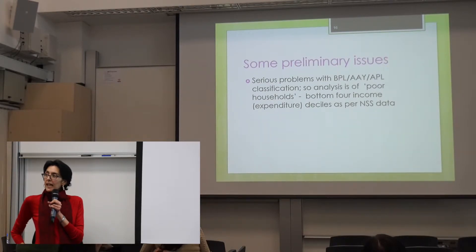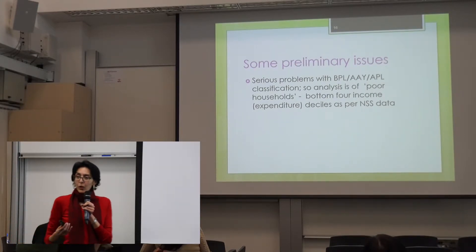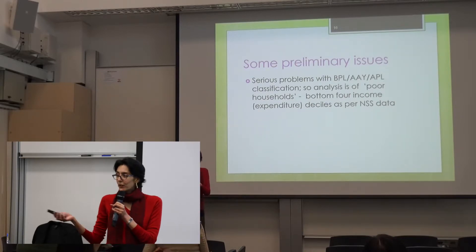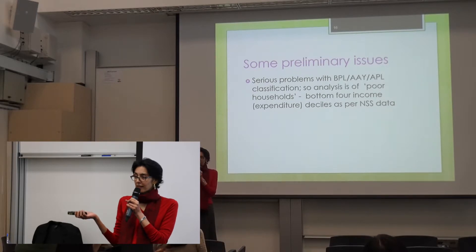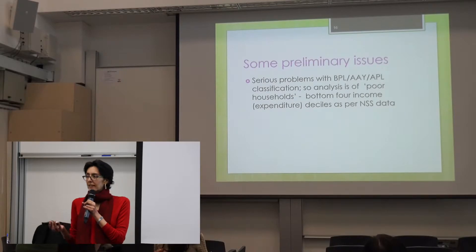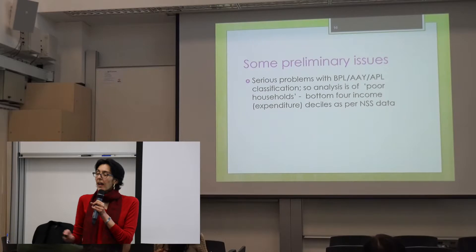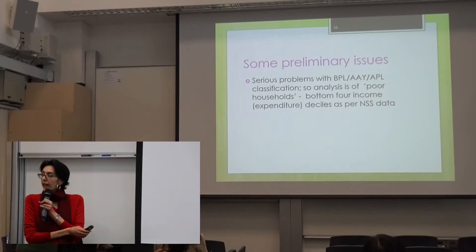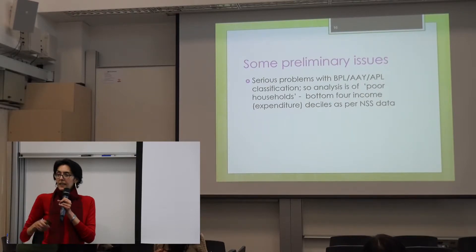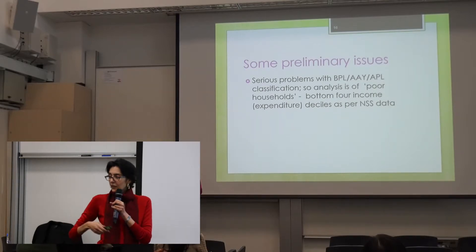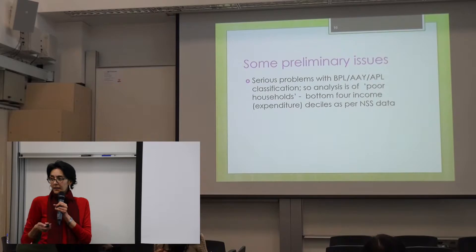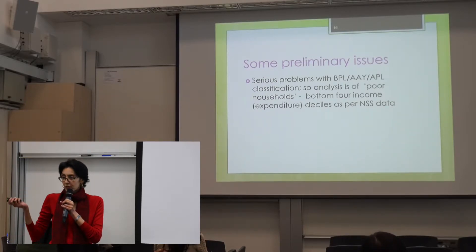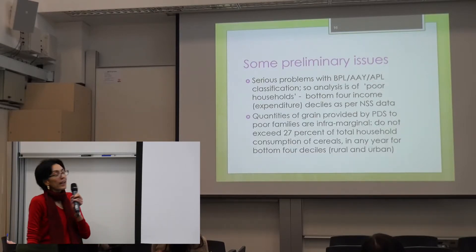The BPL classification has actually become a politicized issue — if your local politician likes you, even if your family is rich, you can get a BPL card entitling you to subsidized grain at a highly subsidized rate, 50% in some cases. So in many cases it's actually a political decision, as opposed to real means testing of whether a household is truly poor. With the NSS data, there's not this issue — it's basically a ranking of households by income. So I've used the bottom four deciles by income in both rural and urban areas as my definition of poor households, showing each decile separately.